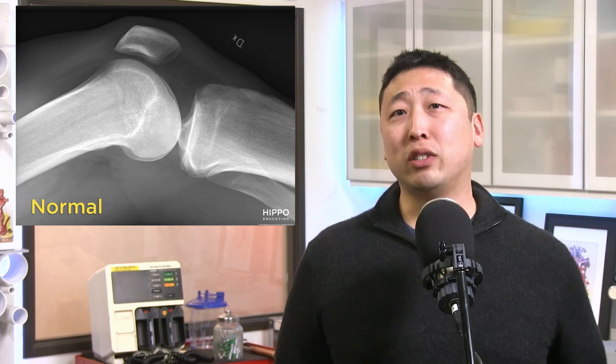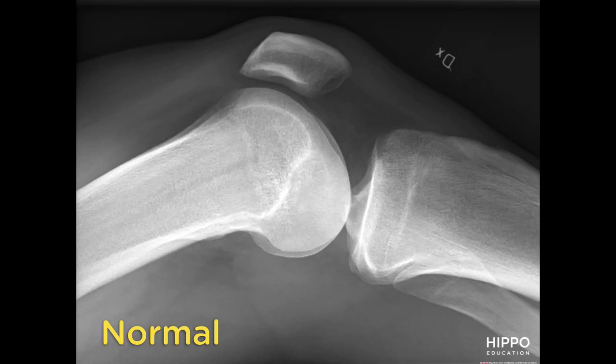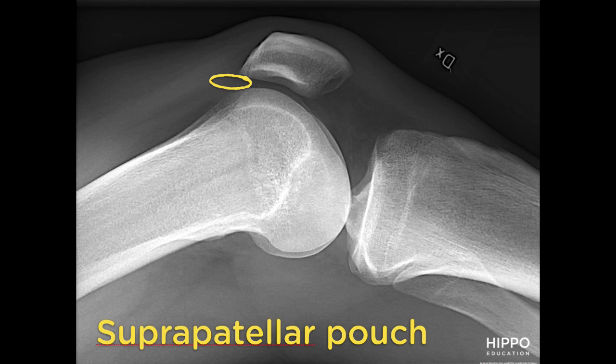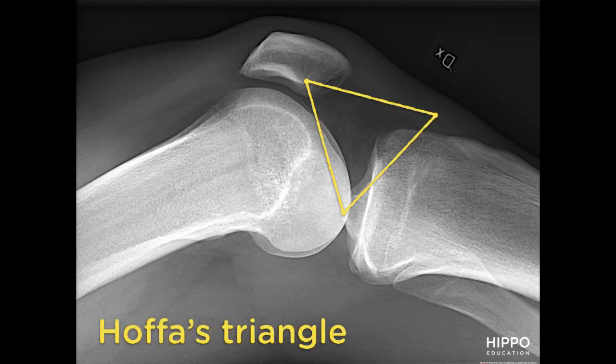Now this is a normal lateral knee x-ray. There are four main structures to note. First is the suprapatellar pouch — in a normal knee, the suprapatellar pouch is not prominent. Second, you can see that the quadriceps tendon is straight and the posterior border of the quadriceps tendon is clearly defined and not blurred in a normal knee x-ray.